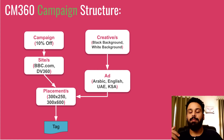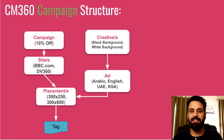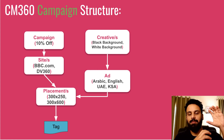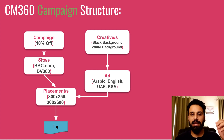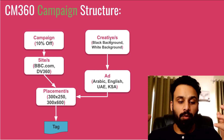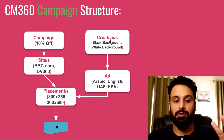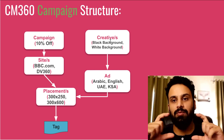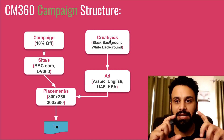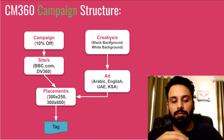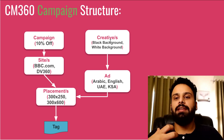Placements are created based on the sizes you have. If KFC has two creatives and is running on BBC.com, you create one site for BBC.com and two placements for the two sizes. A tag is always generated from a placement — each placement has a unique tag. When running the campaign on BBC.com, you generate this tag, give it to BBC, and their ad ops team will traffic it as a creative.